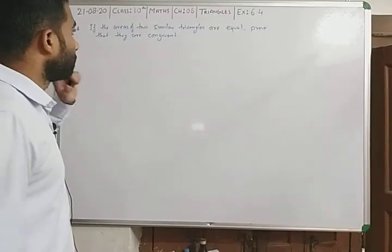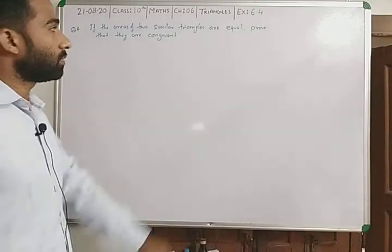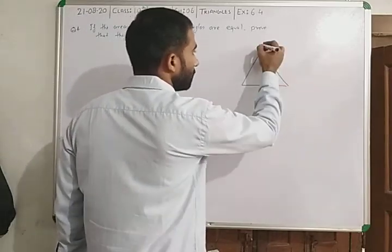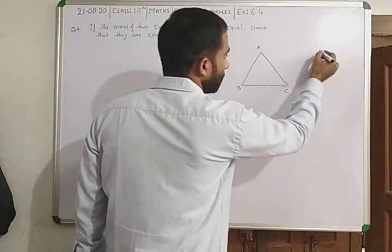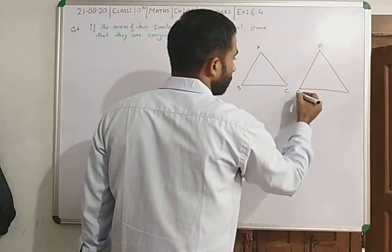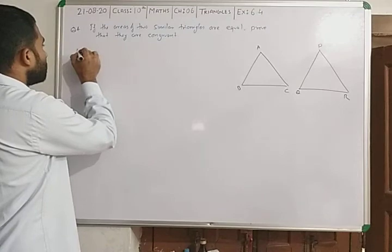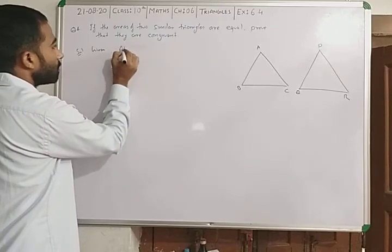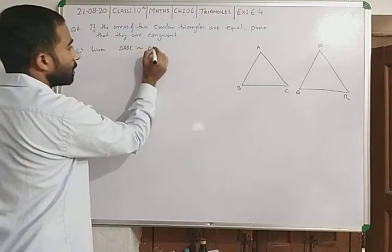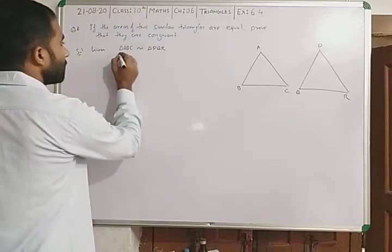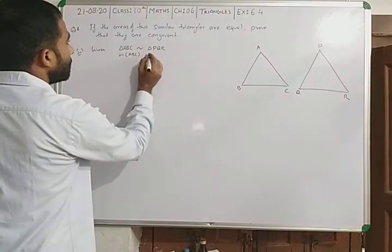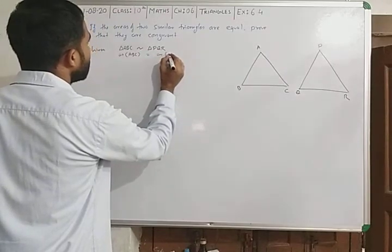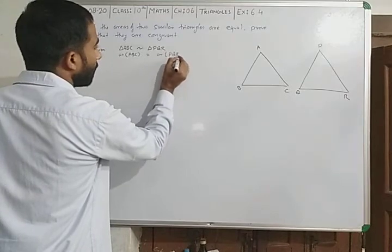Now question number 4. Question says: if the areas of two similar triangles are equal, prove that they are congruent. Let's take those two triangles: triangle ABC and triangle PQR. Given: triangle ABC similar to triangle PQR, and area of triangle ABC is equal to area of triangle PQR.